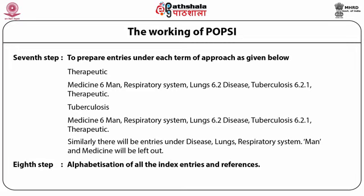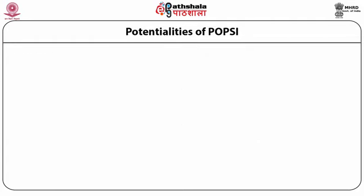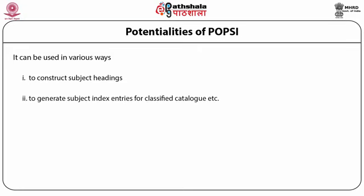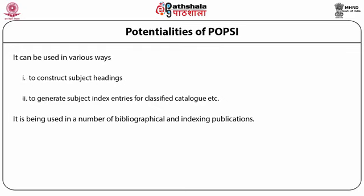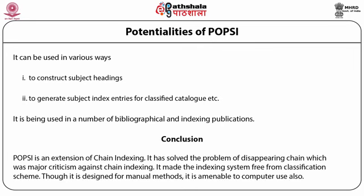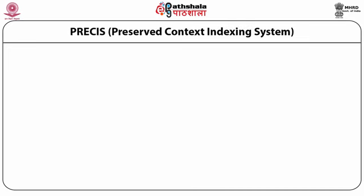Eighth step: alphabetization of all the index entries and references. Potentialities of POPSI: it can be used in various ways — first, to construct subject headings; second, to generate subject index entries for the classified catalog. It is being used in a number of bibliographical and indexing publications. Conclusion: POPSI is an extension of chain indexing. It has solved the problem of disappearing chain, which was the major criticism against chain indexing. It made the indexing system free from classification scheme. Though it is designed for manual methods, it is amenable to computer use also.